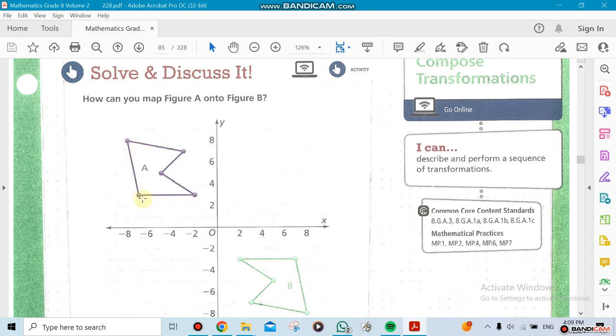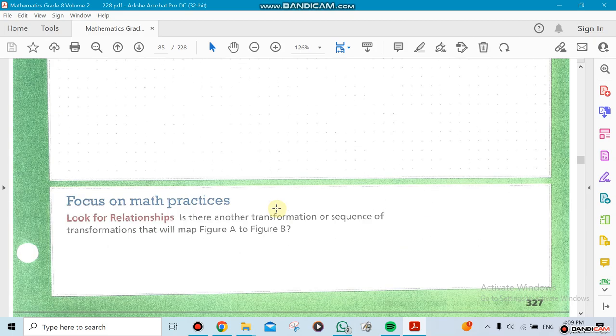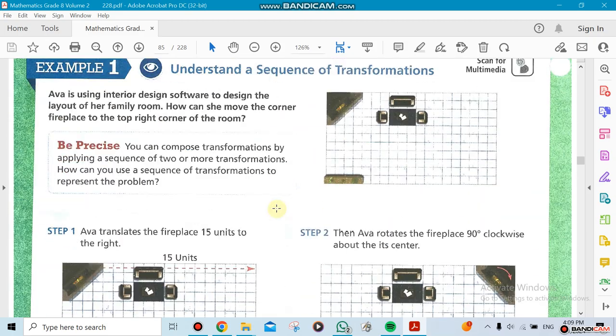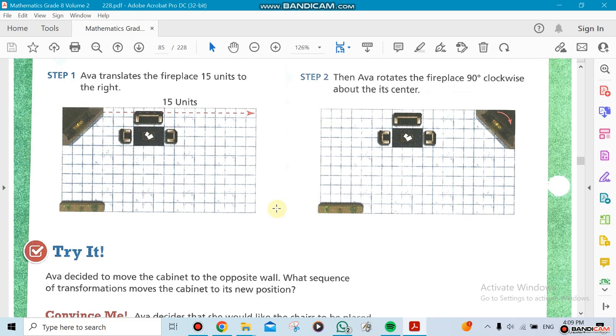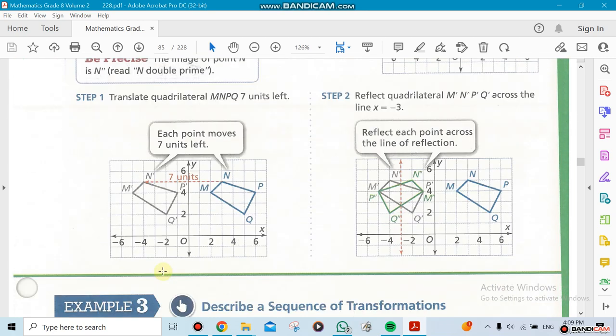For example, look at this shape here. This is the pre-image and this is the image. Now let's say this one went all the way here. How did it go? Was it transferred from one place and then reflected? Was it translated? Was it rotated? That's what we're going to be doing. You can see there's some kind of rotation going on here.